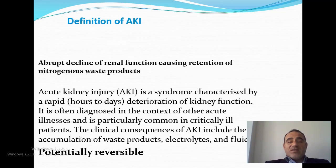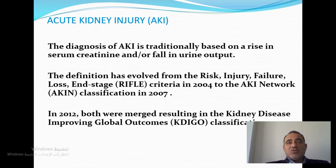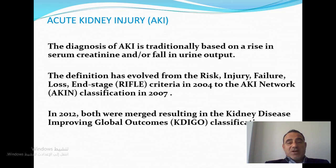The clinical consequences of acute kidney injury include accumulation of waste products, electrolyte disturbances, acid-base disturbances, and fluid disturbances. This condition is potentially reversible. Acute kidney injury is traditionally diagnosed based on two parameters that are easy and handy for any medical person: serum creatinine and urine output. Rising serum creatinine and falling urine output are sufficient to diagnose acute kidney injury.